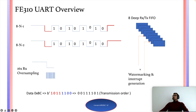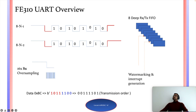UART supports watermarking. On the transmit end, if you set the watermark to four bytes, the UART watermark interrupt is generated if there aren't enough bytes up to the watermark level. On the receive side, the watermark interrupt is generated once bytes are available on the FIFO up to the watermark level. FE310 also supports 16x oversampling on the receive end, which is important to correctly capture the start bit — missing the start bit means the entire data is lost.